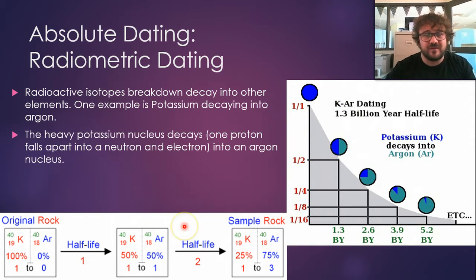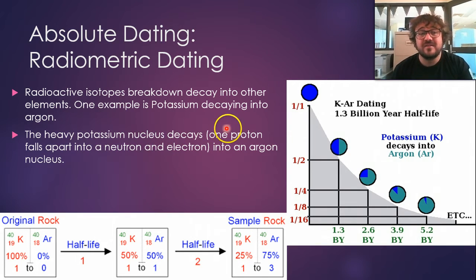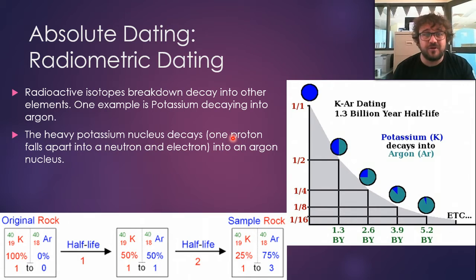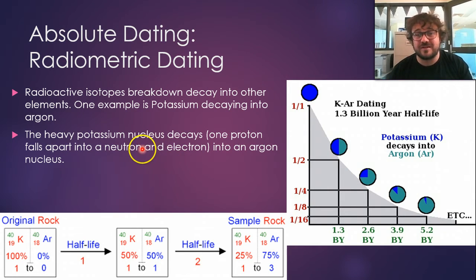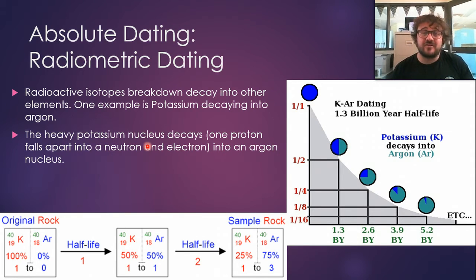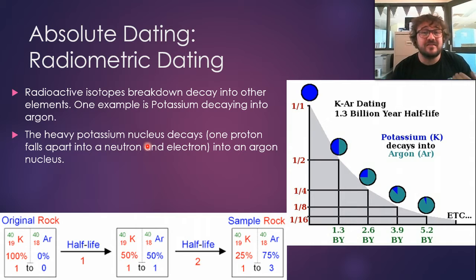So they have a potassium nucleus that decays — what this means is one proton, which is what defines the atom by how many protons there are, falls apart and it turns into both a neutron and an electron. A proton is a neutron plus an electron stuck together, sort of. It falls apart and it makes a neutron and an electron. And because it's one proton down now, it turns into an argon nucleus.